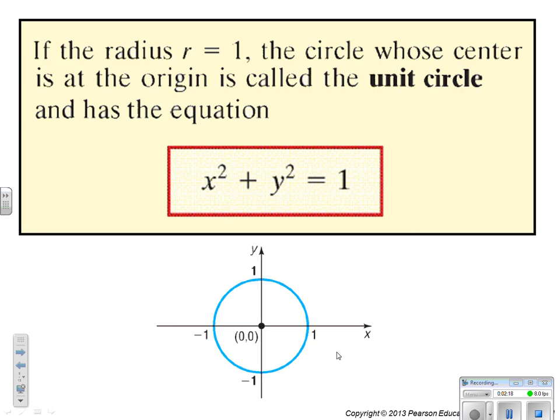All right, when your radius is 1 and the center is at the origin, you make a special circle, very special, called the unit circle. And it has the equation x squared plus y squared equals 1. We will revisit this later, but it's important to keep it rolling around in our brains.